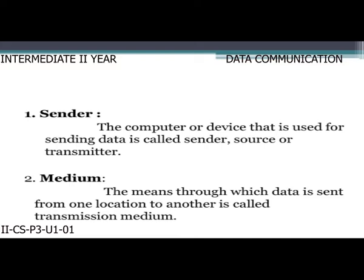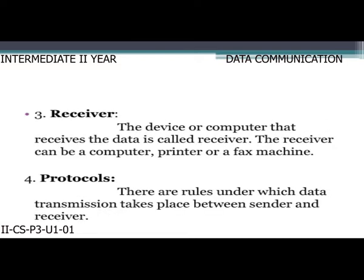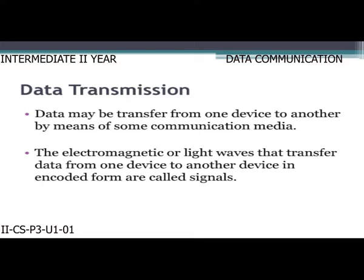The sender is the computer or device used for sending data, also called source or transmitter. The medium is the means through which data is sent from one location to another, called the transmission medium. The receiver is the device or computer that receives the data — it can be a computer, printer, or fax machine. Protocols are the rules under which data transmission takes place between sender and receiver.